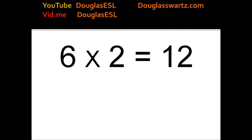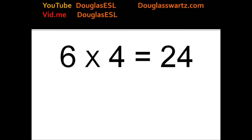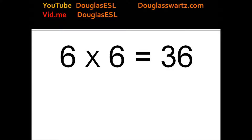6 times 2 equals 12. 6 times 3 equals 18. 6 times 4 equals 24. 6 times 5 equals 30. 6 times 6 equals 32.